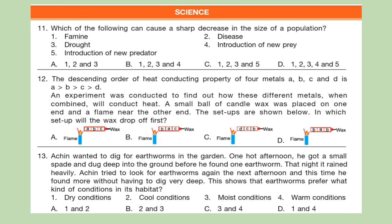Science. Question 11: Which of the following can cause a sharp decrease in the size of a population? Here are the options, select your answer. Question 12: The descending order of heat conducting property of four metals A, B, C and D is A greater than B greater than C greater than D. An experiment was conducted to find out how these different metals when combined will conduct heat. A small ball of candle wax was placed on one end and a flame near the other end. The setups are shown below. In which setup will the wax drop off first?